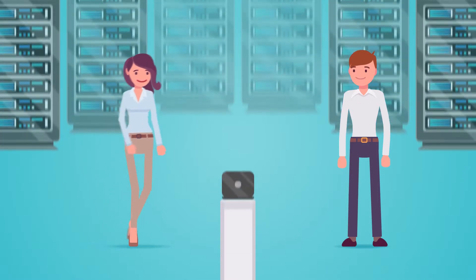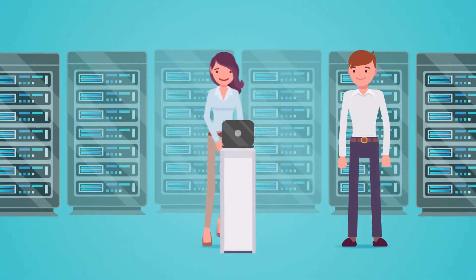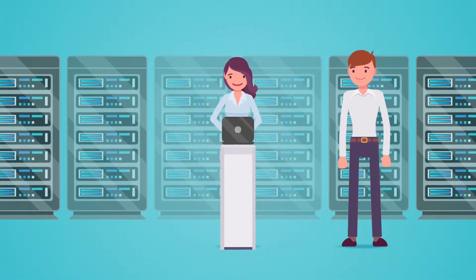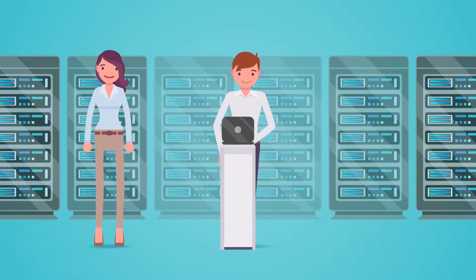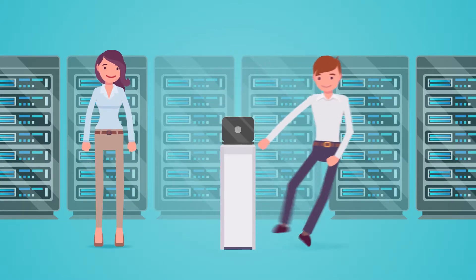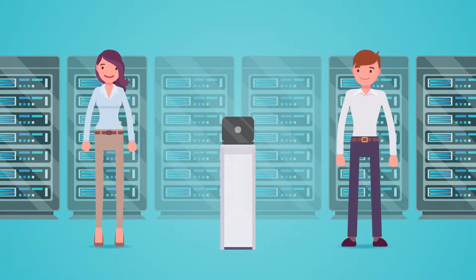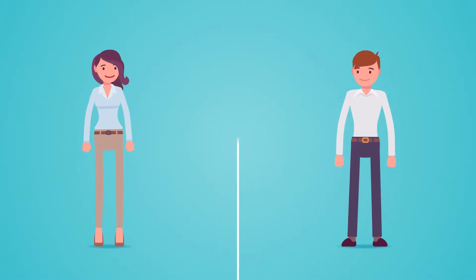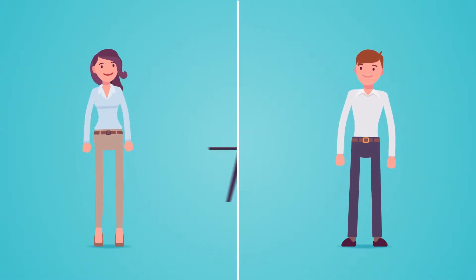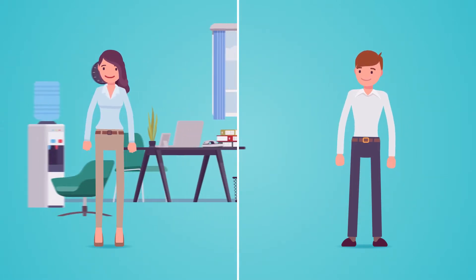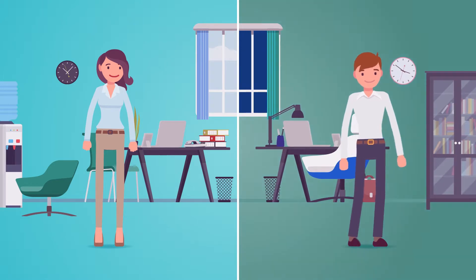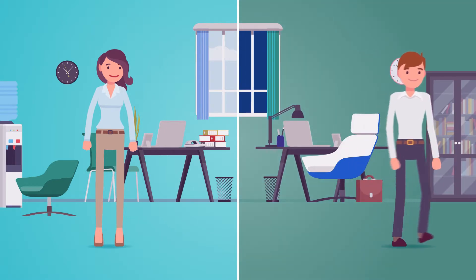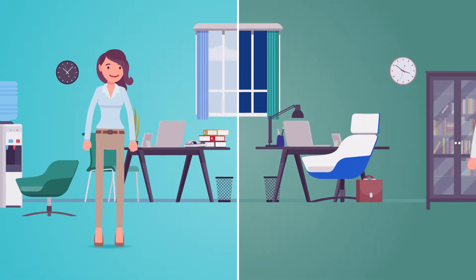With most key management systems, Kate and Chris would have to be in the same place at the same time, each manually inputting several different components via the keypad. But with CKMS, the dual control element can be carried out asynchronously. Kate and Chris don't have to be together, and they can complete their tasks at different times.